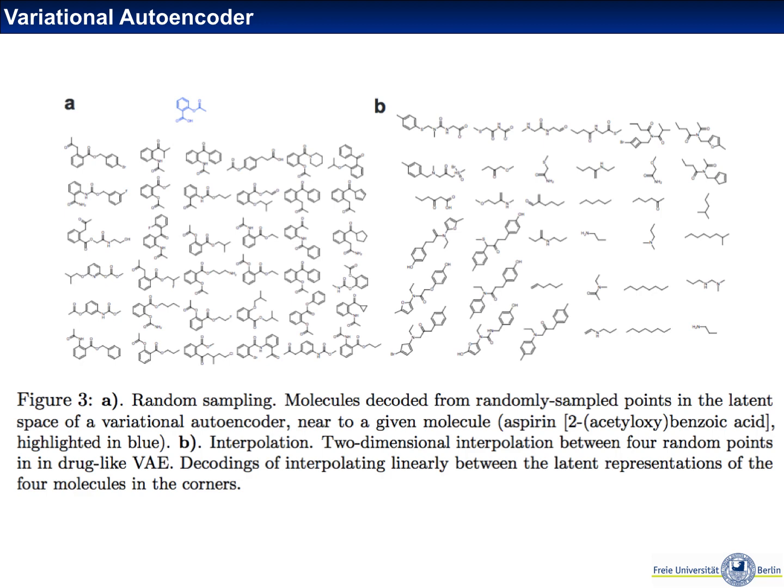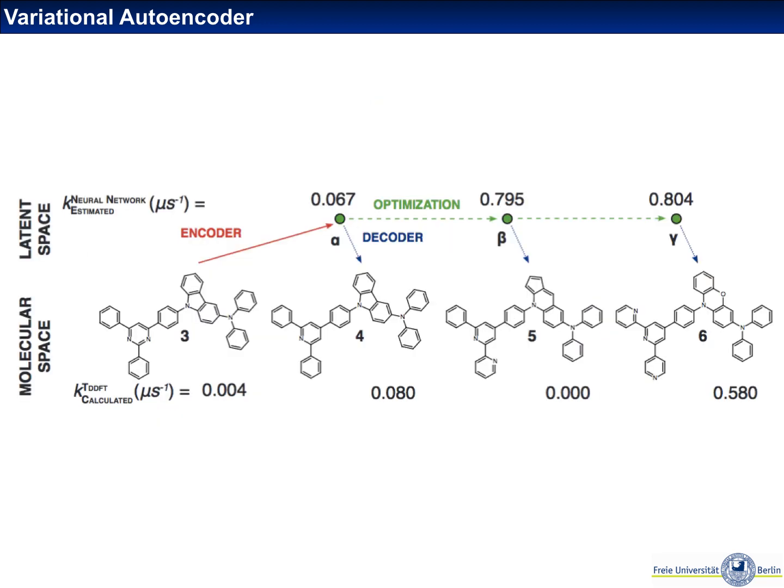The hope is that this representation or organization of chemicals in latent space somehow also correlates with the function of the molecule. We can, for example, start from a molecule we know about and then move along latent space in a direction in which a certain property, such as the fluorescence intensity at a certain wavelength, increases. Then generate new molecules and hope that these actually really have an improved fluorescence intensity. In this particular study, the authors indeed did that and then did quantum mechanical calculations to verify that you can find better fluorescent molecules in this way.